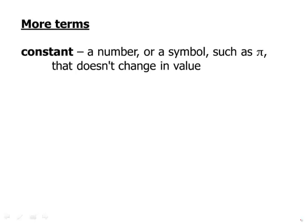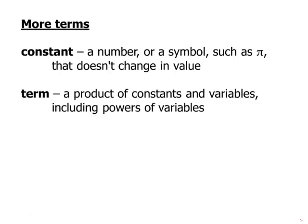So more terms. A constant is a number or a symbol such as pi that doesn't change in value. So constant is just a fancy word we use for ordinary numbers. A term is a product of constants and variables, including powers of variables. So for example, all of these are terms. It could be just a single number by itself, a single variable by itself, or numbers times variables, and it includes powers of variables.